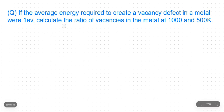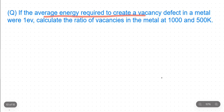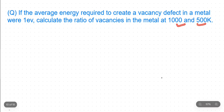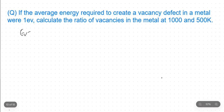Now let's see what is given in this question. This question says that if the average energy required to create a vacancy defect in a metal is one electron volt — that means E_V is given — then we need to calculate the ratio of vacancies in the metal at two temperatures: 1000 Kelvin and 500 Kelvin.